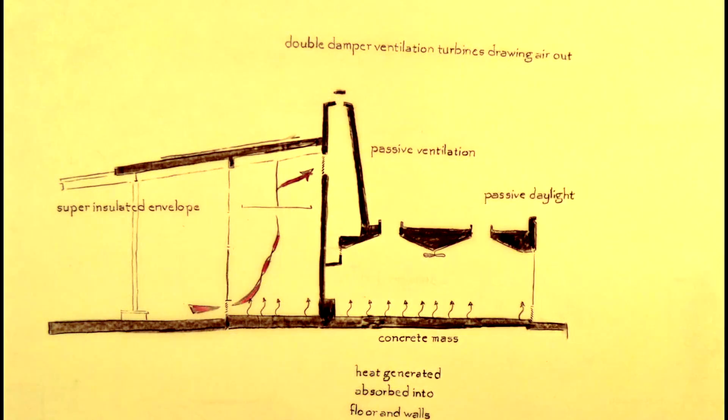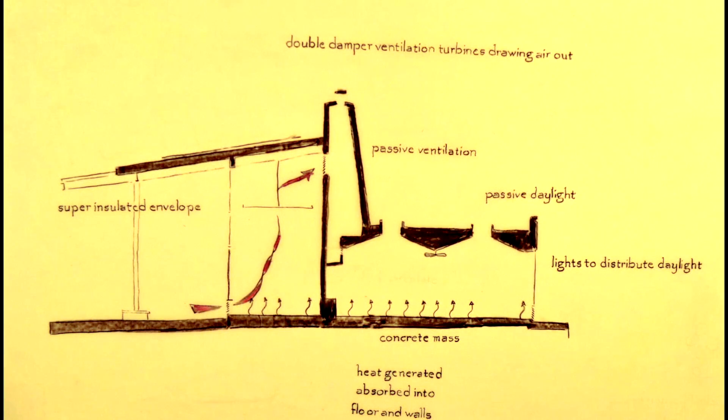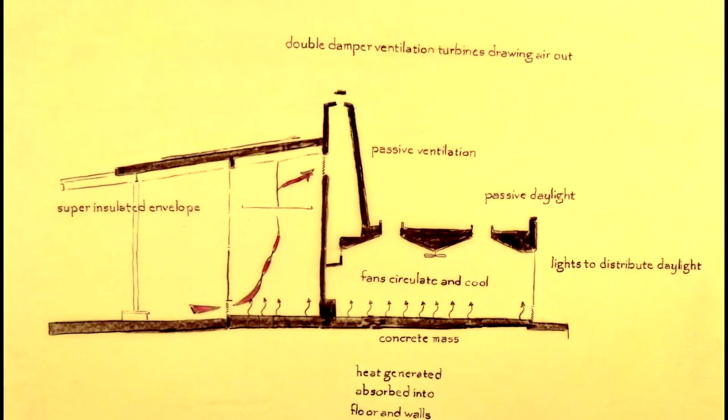A passive daylight system maximizes natural indirect sunlight with skylights called clouds that diffuse and distribute daylight to reduce or eliminate the need for electric lighting. Ceiling fans are used, as needed, to circulate air to maintain comfort levels.